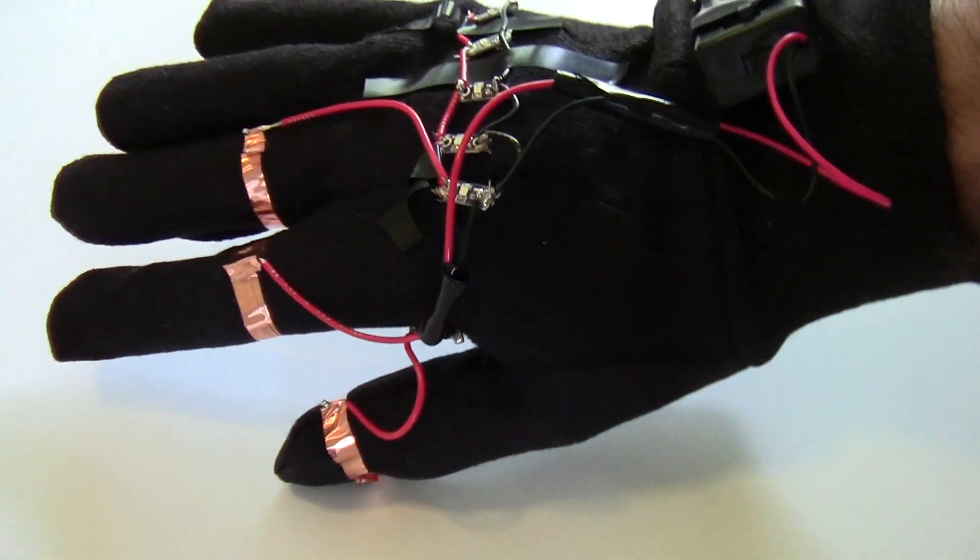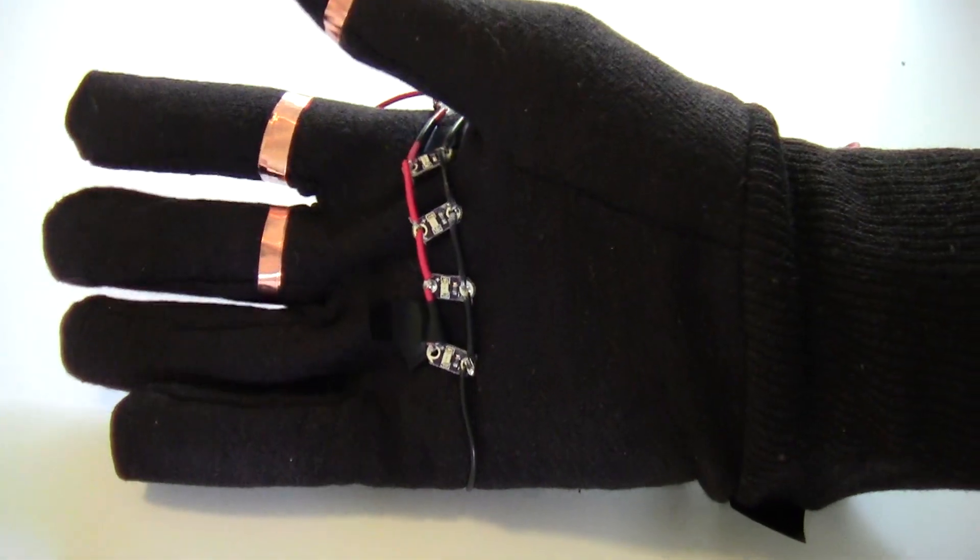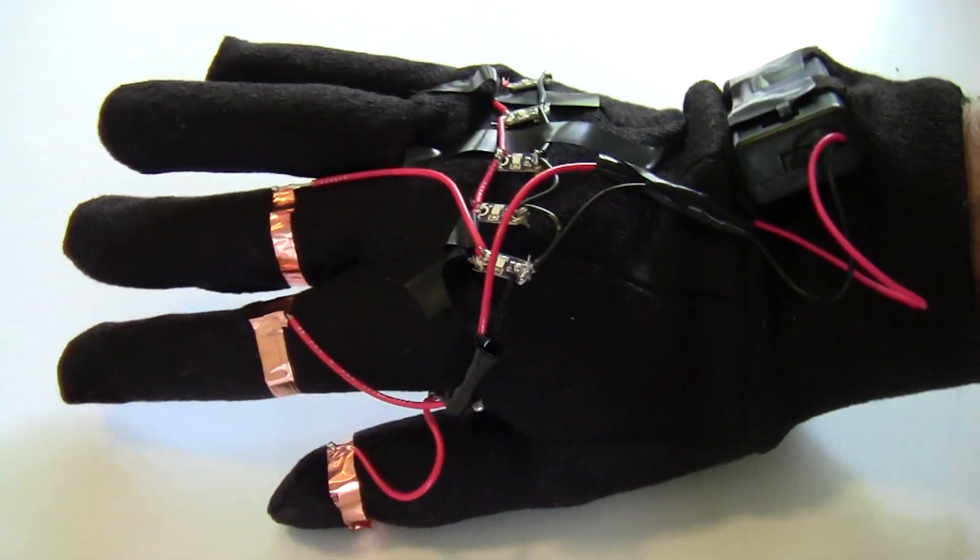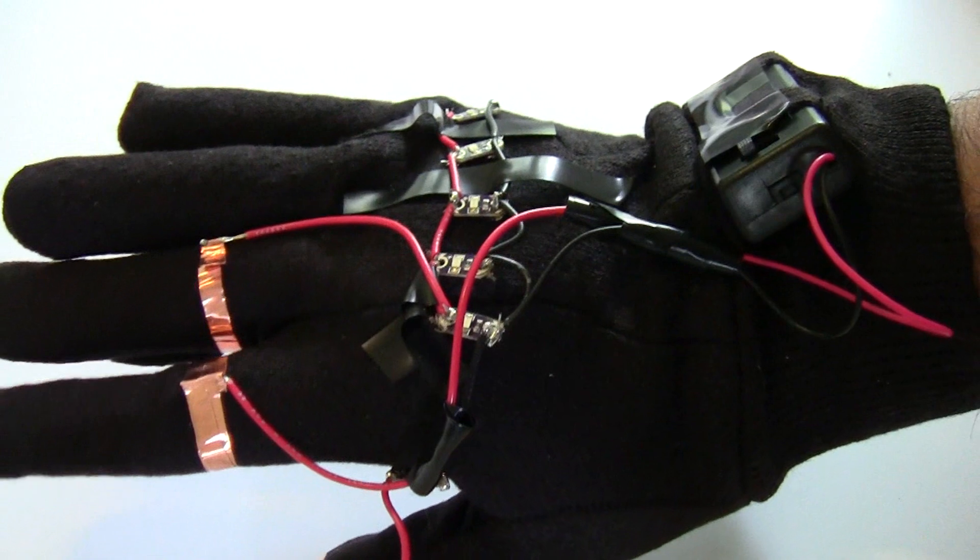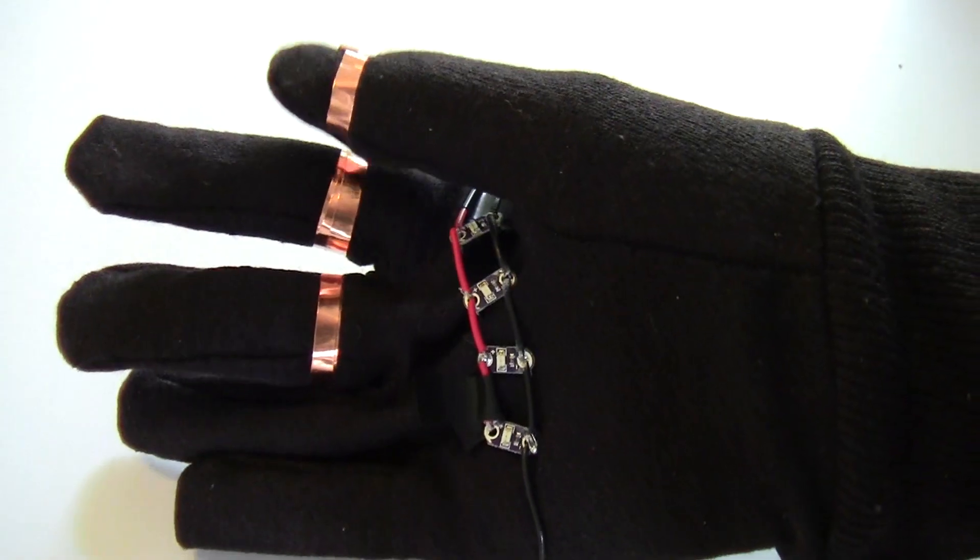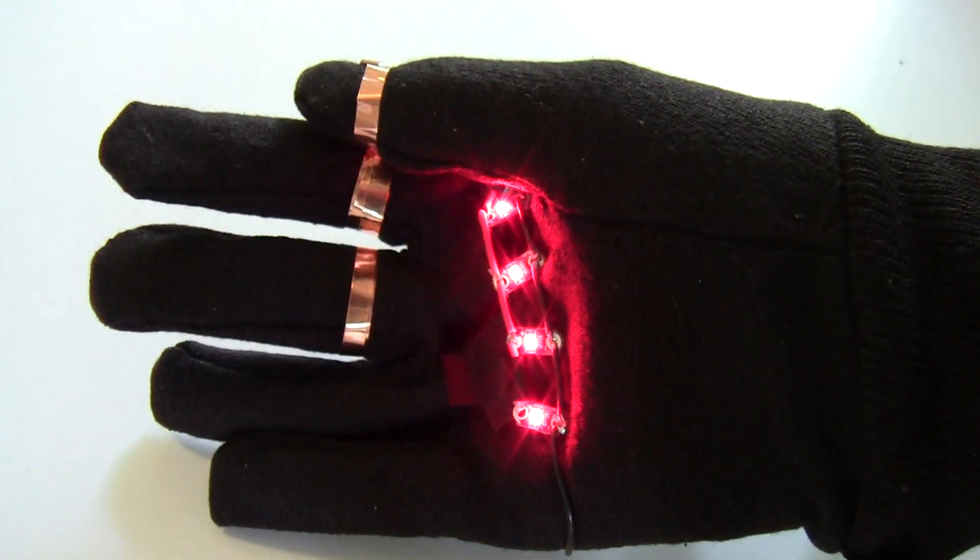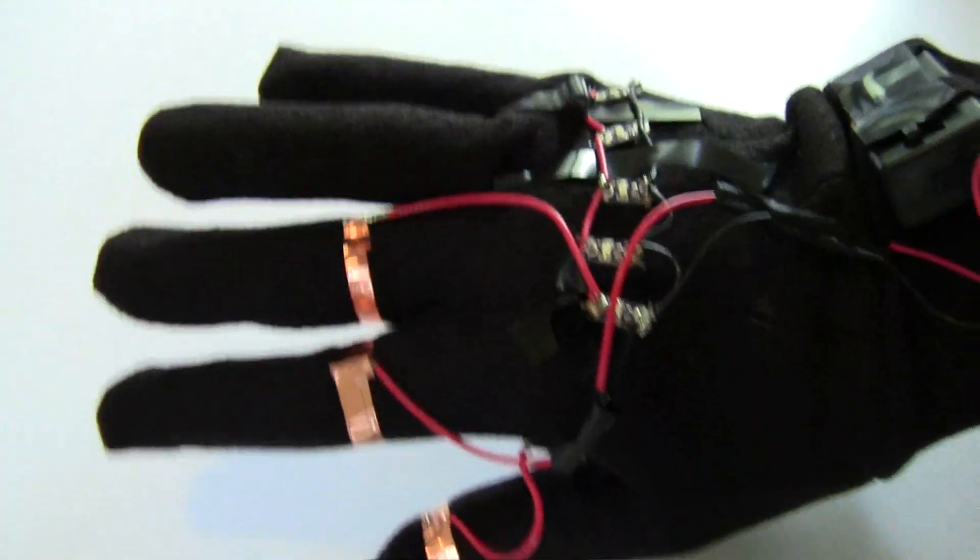Hi, this is Ben Finio with Science Buddies, and this video is going to introduce you to our LED traffic glove project, which is a custom-made glove with a built-in battery pack and red and green LEDs that are controlled by pinching your fingers together, which allows you to give stop-and-go signals to traffic and pedestrians.